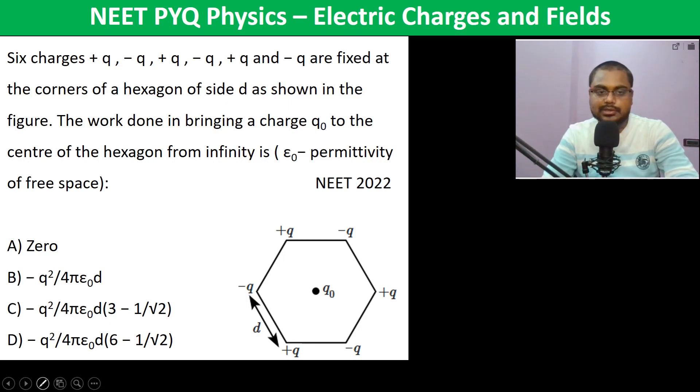Six charges are fixed at the corners of a hexagon of side d as shown in the figure. The work done in bringing a charge q₀ to the center of the hexagon from infinity is...